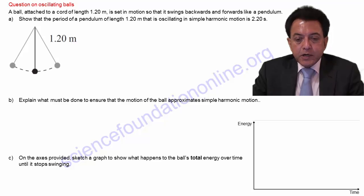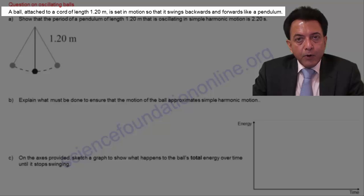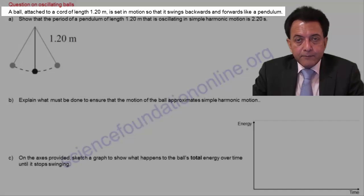This question begins by telling us that a ball attached to a cord of length 1.20 meters swings back and forth like a pendulum.